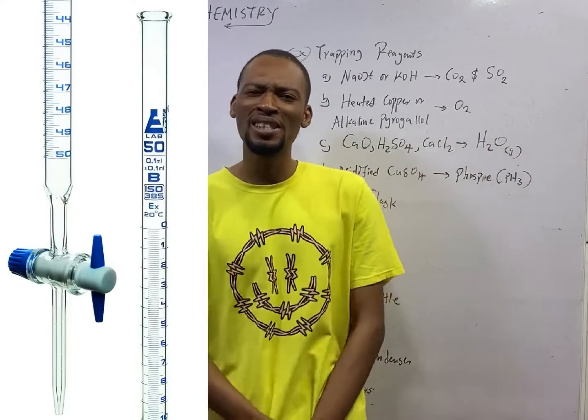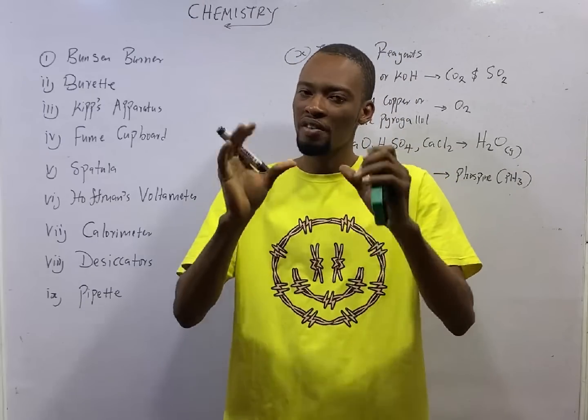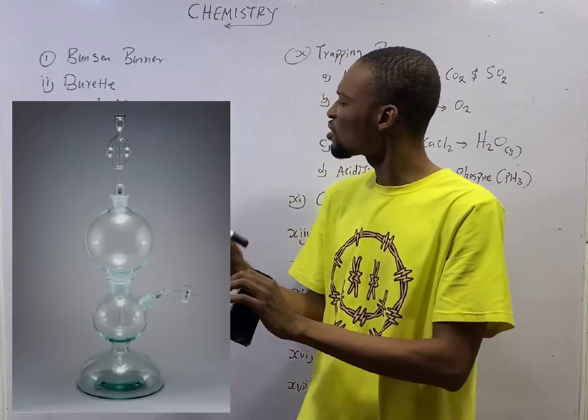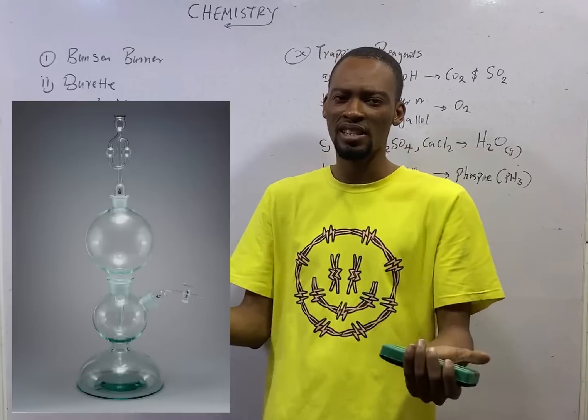The burette is used in acid-base titration to measure the volume of acid. Kips apparatus is used for preparation of gases which are needed intermittently. For example,